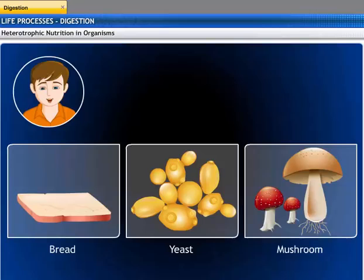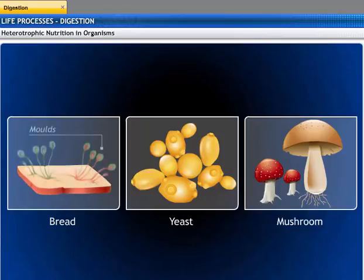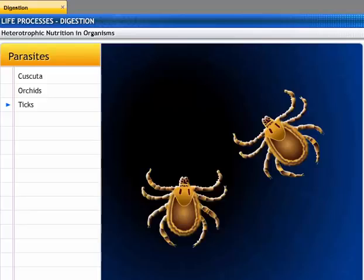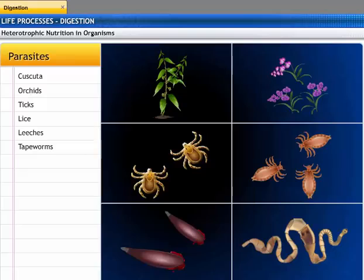Do all heterotrophic organisms take their food in the same manner? No. Different organisms obtain and ingest their food in different ways. Fungi like bread molds, yeast, and mushrooms break down non-living organic material outside their bodies before absorbing it. Parasites like Kuskuta, orchids, ticks, lice, leeches, and tapeworms get their food from living host plants or animals without actually killing them.